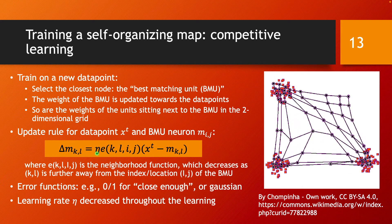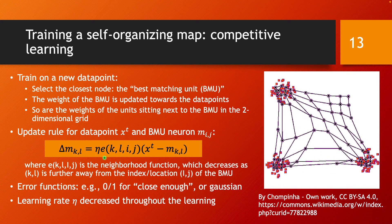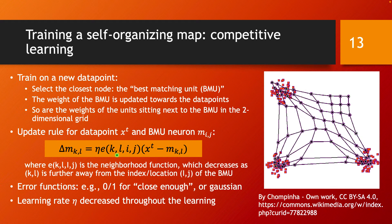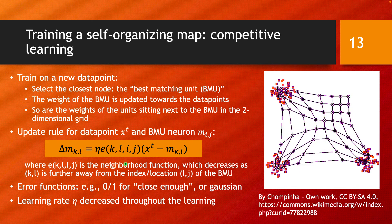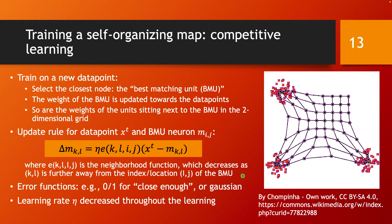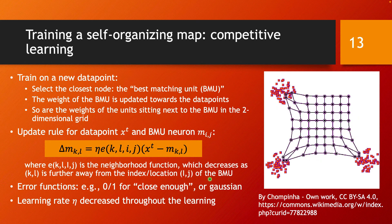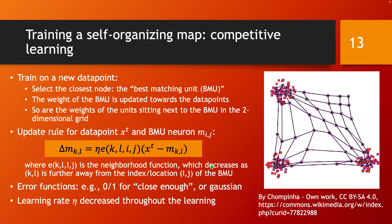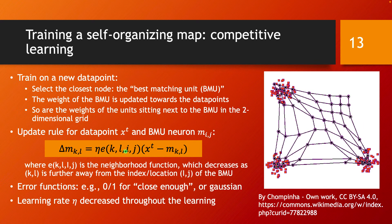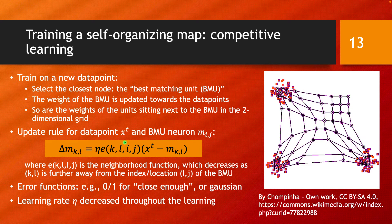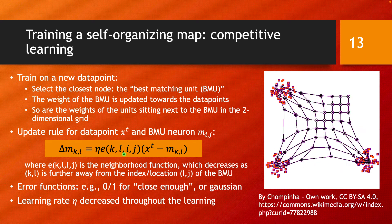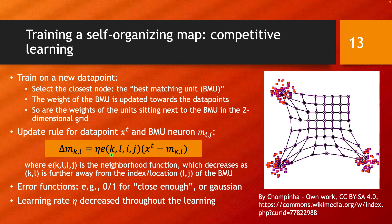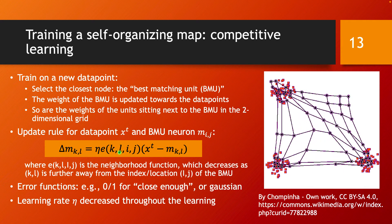There is a learning factor, as discussed in stochastic gradient descent algorithms, but the new element is the neighborhood function E(KL). This function gives the update for the unit at index K,L based on the best matching unit I,J — it decays as K,L moves further away from I,J. The BMU receives the largest update, nearby units receive substantial updates, and units further away receive progressively smaller, nearly negligible updates.